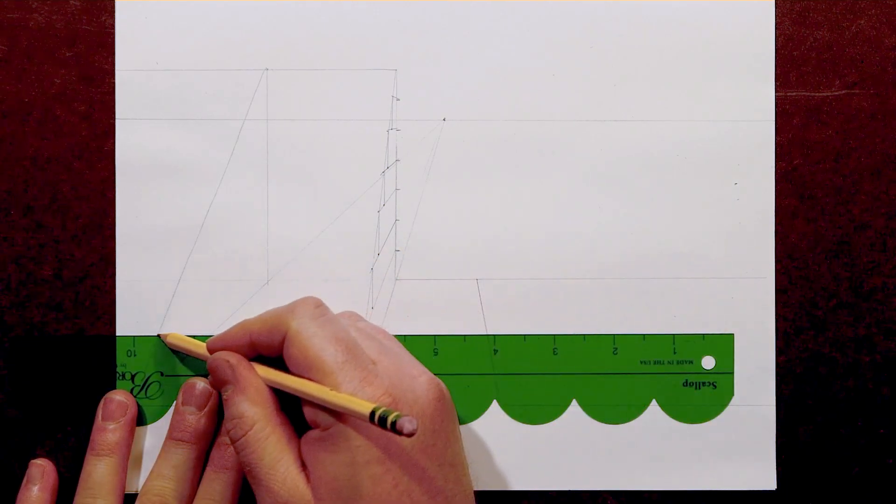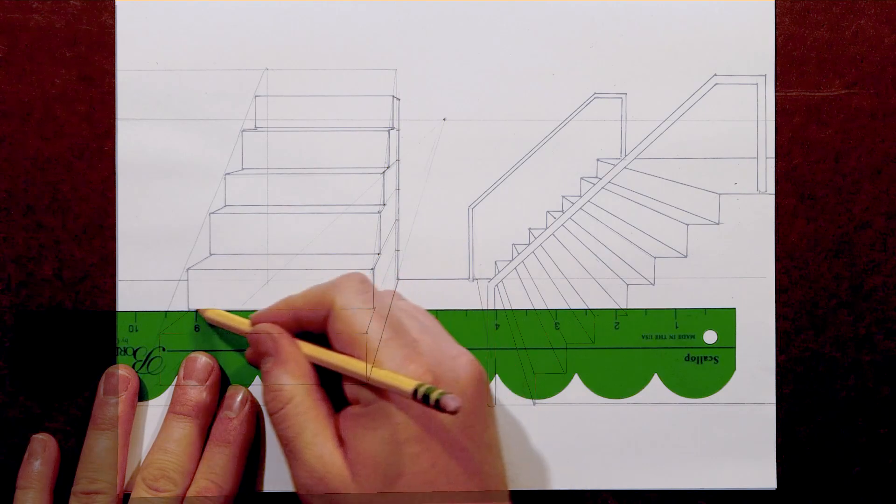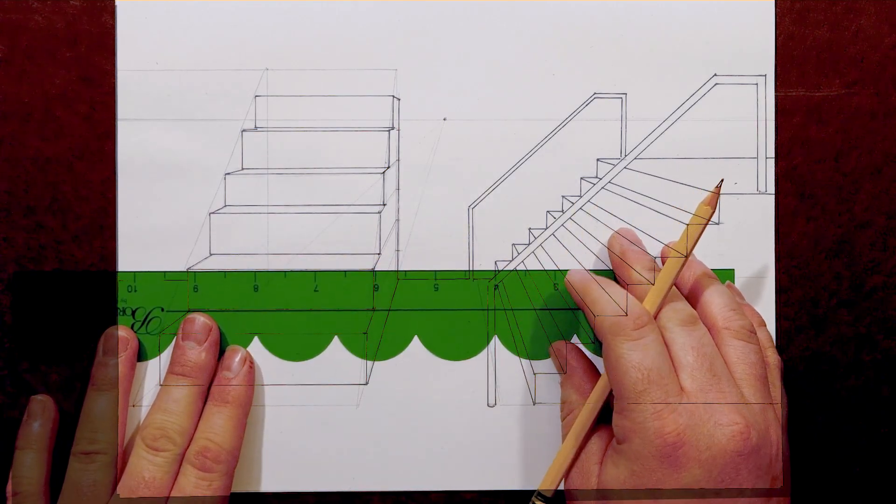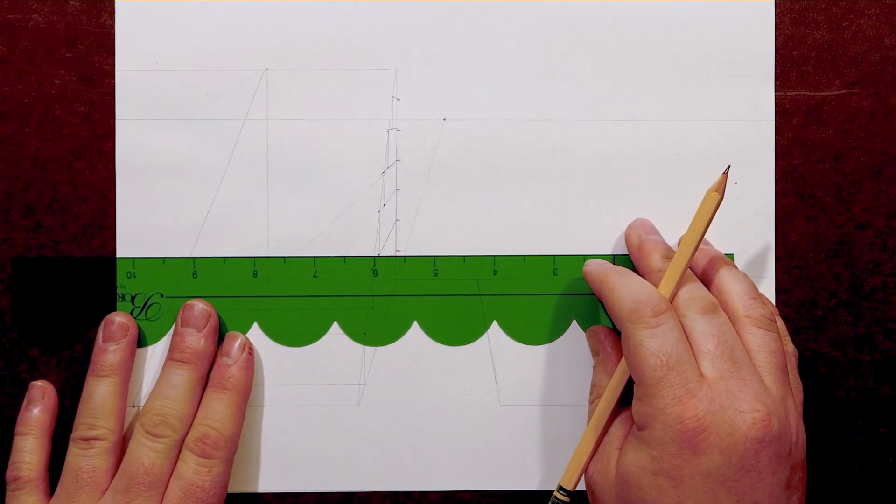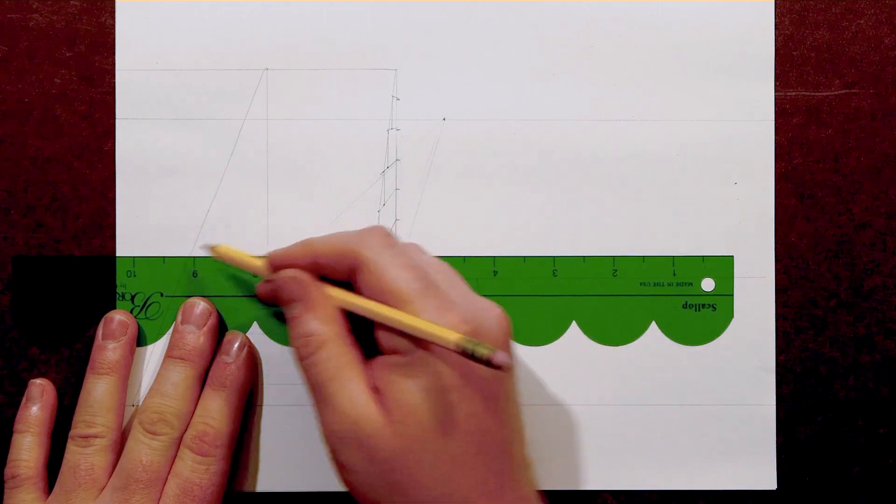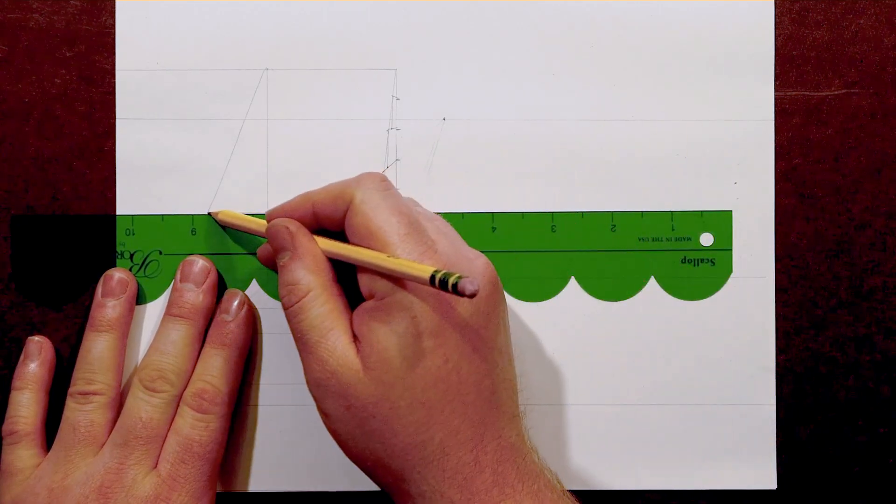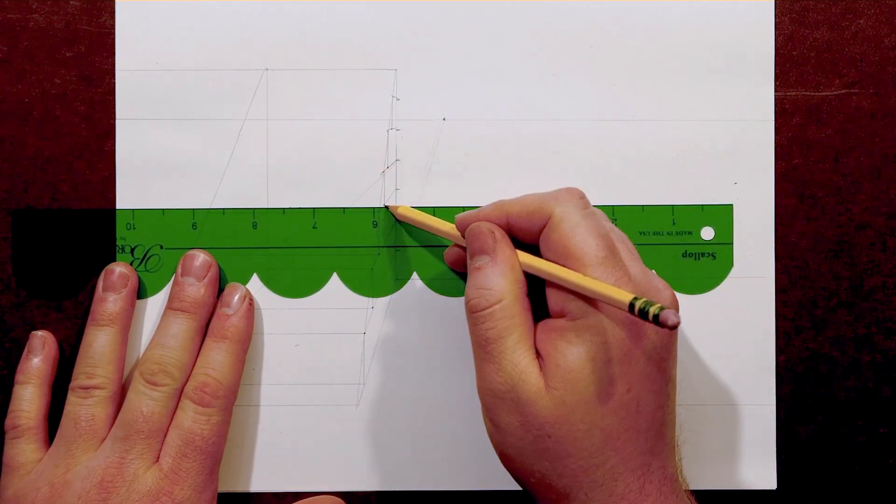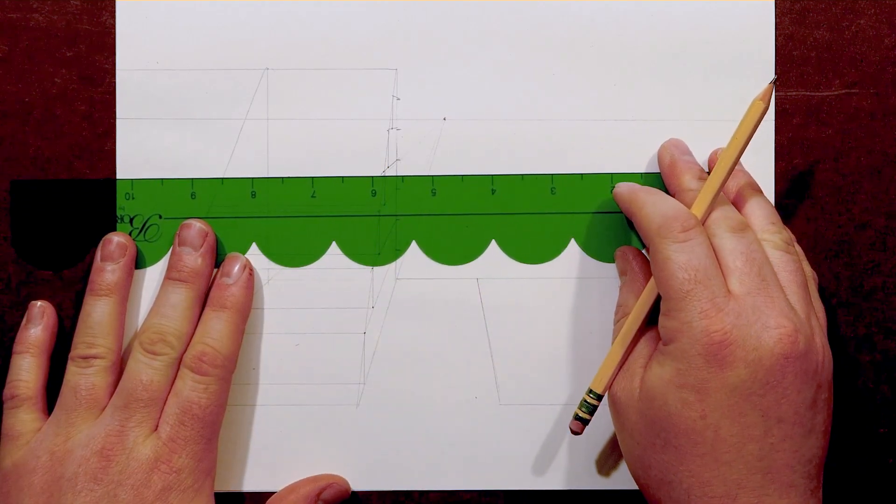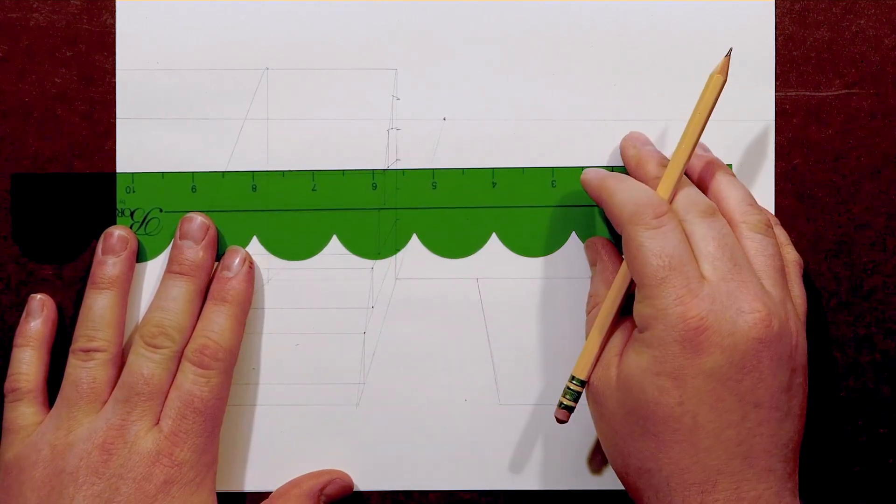I need to be especially careful of using a horizontal line to transfer each one of those points across. If I start to dip, which you may notice I do a little bit, I'm going to start to end up with distortions or mistakes that will be difficult to identify later on.